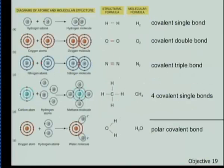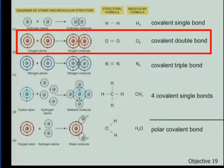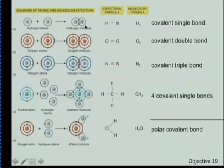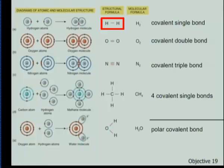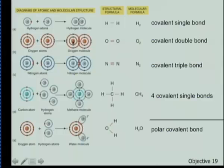Sometimes we share two electrons, forming a single bond. Sometimes four electrons are shared — that's a double bond. Sometimes six electrons are shared — that's a triple bond. One line in a structural drawing always means two electrons. Two lines means four electrons. Three lines means six electrons. We are only talking about the shared electrons here; there are still other remaining electrons on each atom.